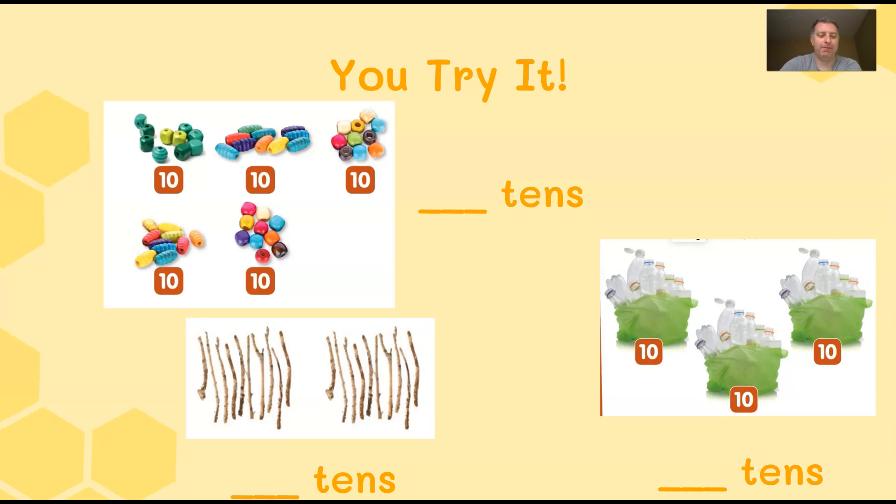All right, let's check your work. So for beads, I have one, two, three, four, five. That's five tens. For sticks, I have one, two, two tens. And for bags of trash or those plastic bottles, I have one, two, three, three bags of plastic bottles in groups of 10. That's three tens. Let's practice some more friends.